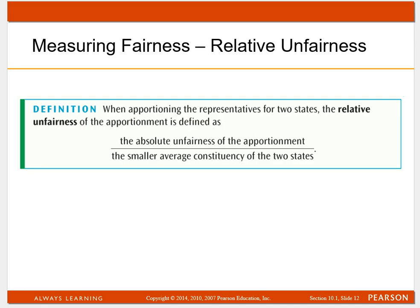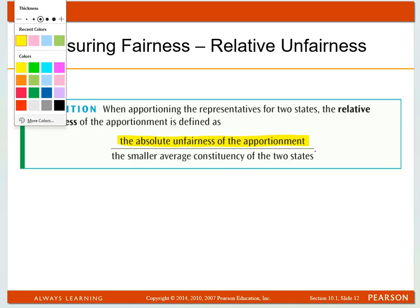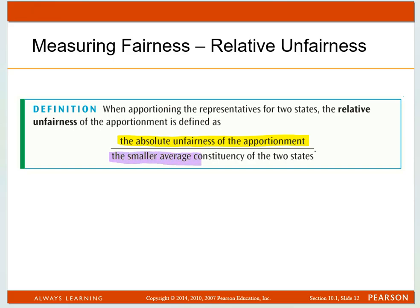My Math Lab actually lets you leave it in decimal form, so instead of saying 55% you would just say 0.55. All you have to do is take the absolute unfairness of the apportionment — you have to calculate that first — and then you divide that by the smaller average constituency.